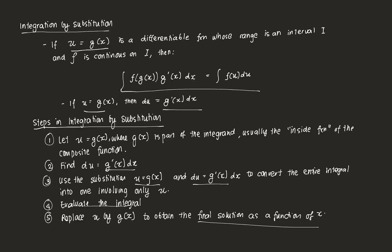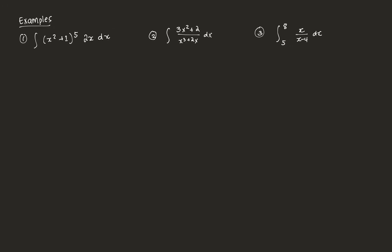Let's go straight to an example. Say we have integral of (x² + 1)⁵ times 2x dx. It's a bit more complicated than the other integrals we've been dealing with. For this case, let u be equal to x² + 1. Notice that it's the inner function of the composite function that we have.